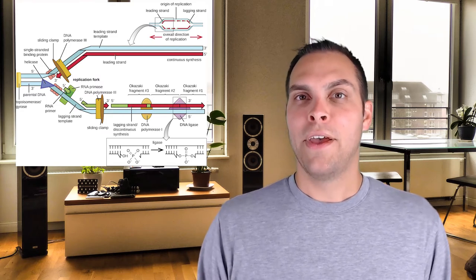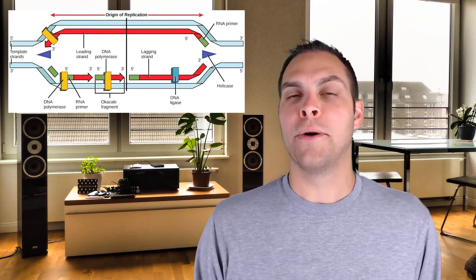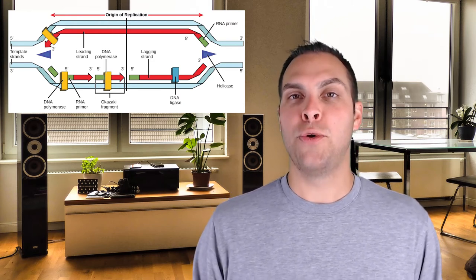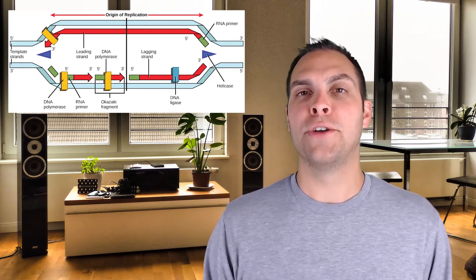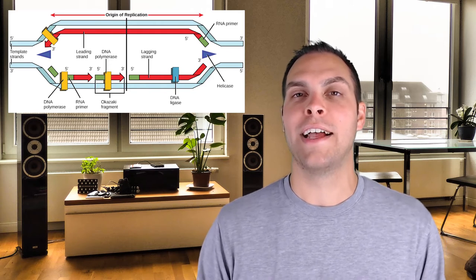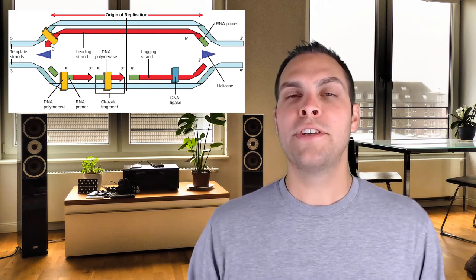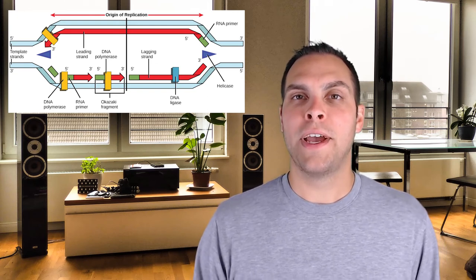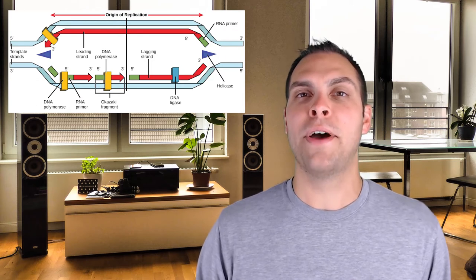At any origin of replication, there are actually two replication forks. Bacteria typically have one origin per chromosome, whereas eukaryotes often have multiple origins on each chromosome. Each origin will have two replication forks working in opposite directions — DNA replication is bidirectional. These two replication forks and the machinery that operates them essentially function as a mirror image of each other.